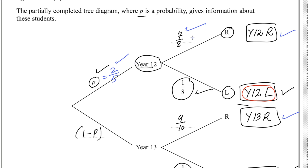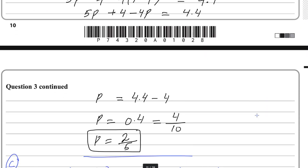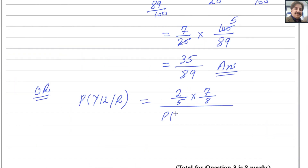The probability of right-handed can be found by adding the two right-handed outcomes. So the denominator is: P(Year 12 and right-handed) + P(Year 13 and right-handed) = 2/5 × 7/8 + 3/5 × 9/10.